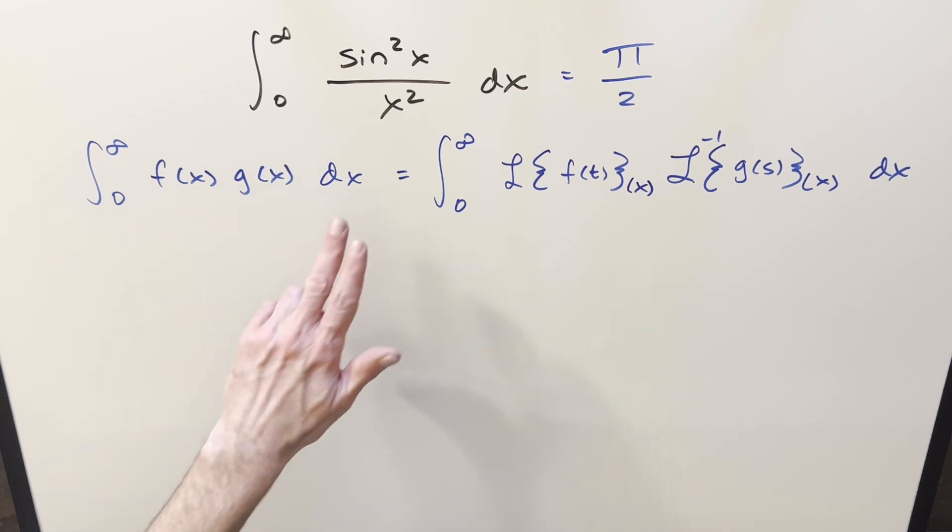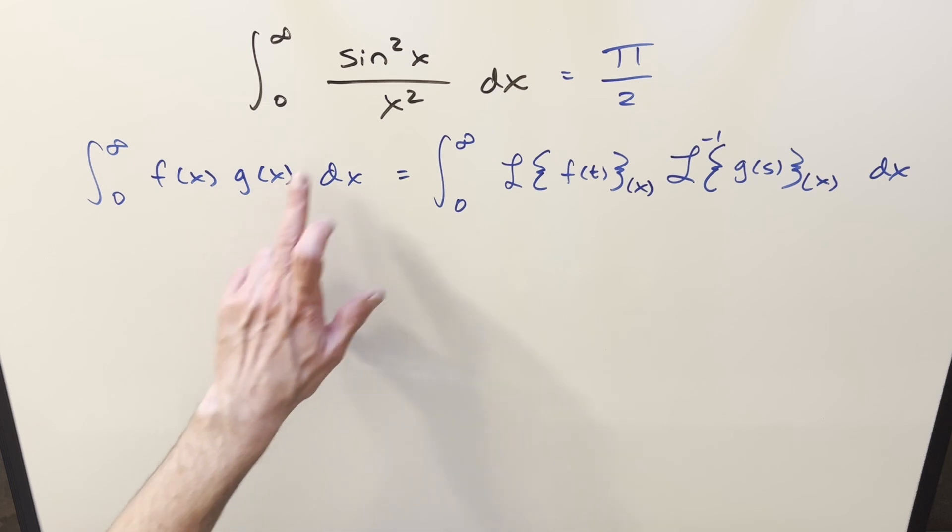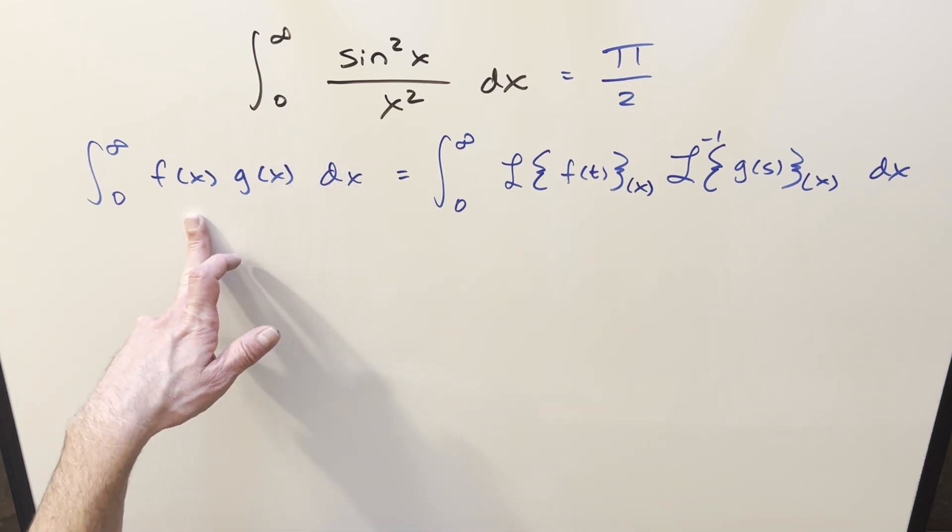But in this one, I think we'll go with this, where we'll just kind of equate our integral to this form here, f of x times g of x.